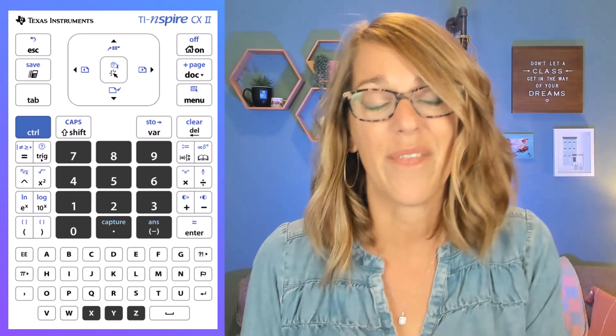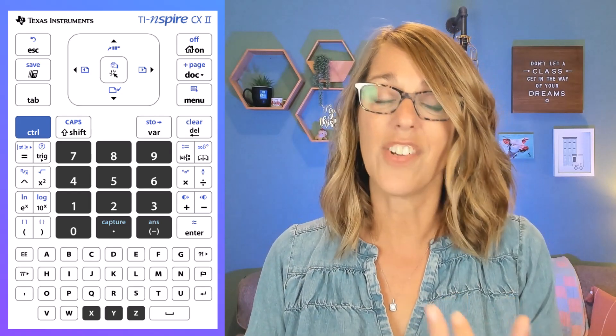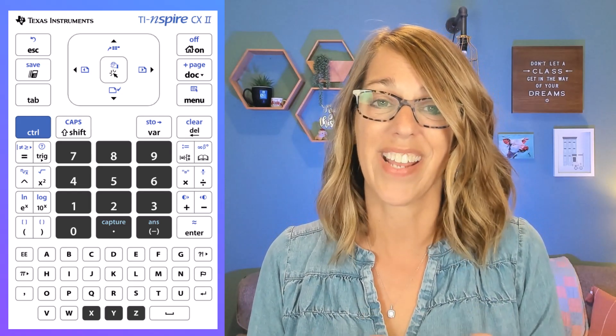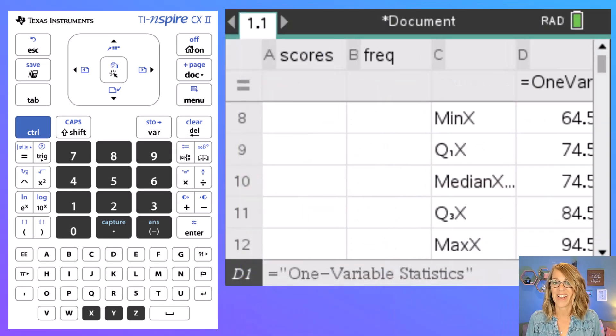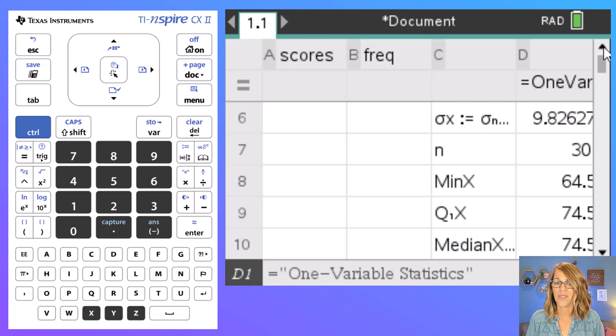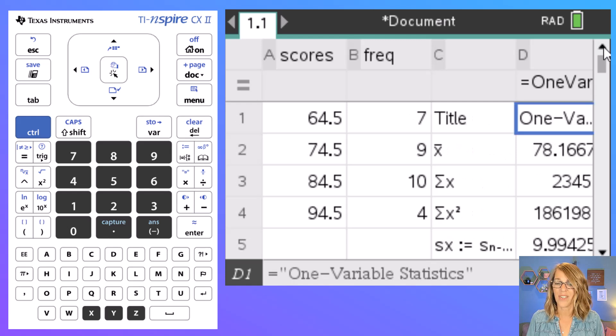What you don't have here though are things like the range, a mode, or an interquartile range. To find the mode I actually just want my data. So I can go back to those data values that I've entered or I can go back to my original list. The mode is the most frequent so I look for the value with the highest frequency. My mode is represented by a midpoint of 84.5.